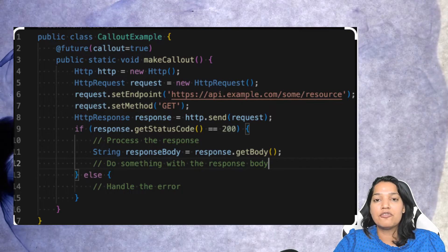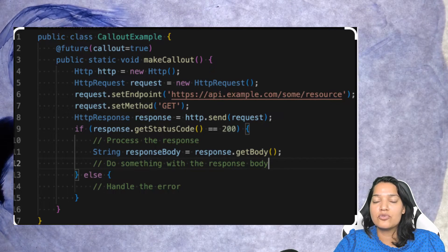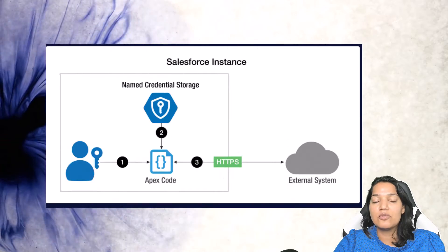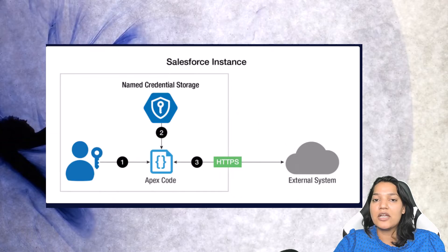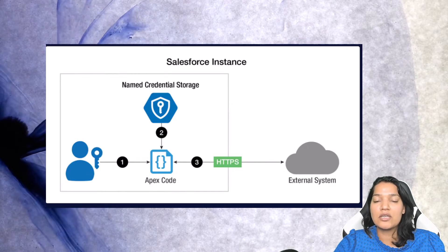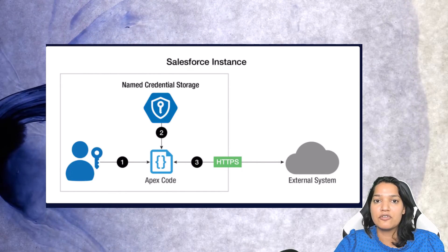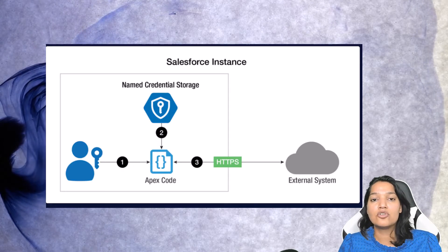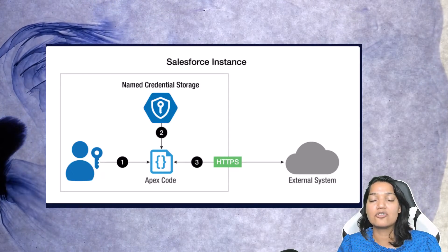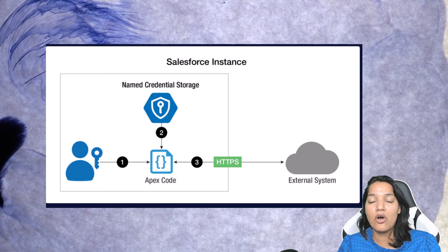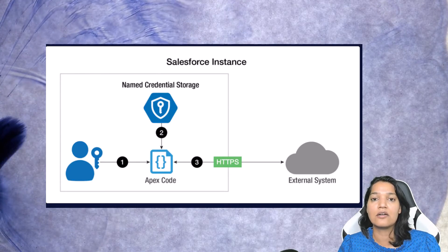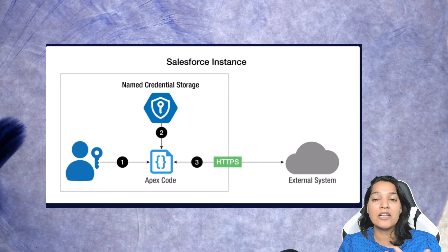The first step is you are going to use your username and password to authenticate yourself. Now sometimes you will be using Named Credentials to store that information. Named Credentials will ease your effort because the authentication part — where the token has to be generated and added to subsequent calls automatically — will all be taken care of with the help of Named Credentials.